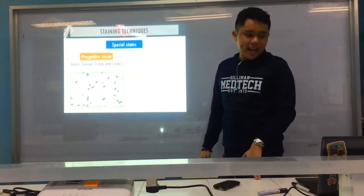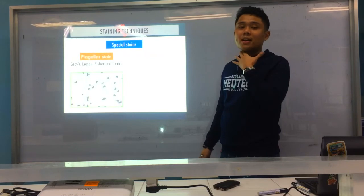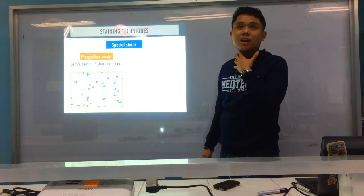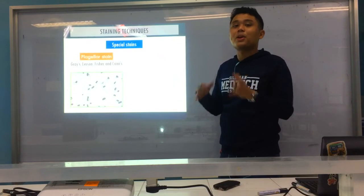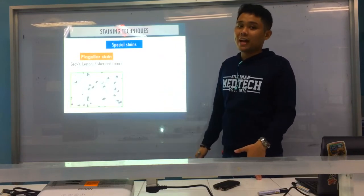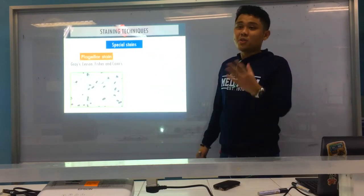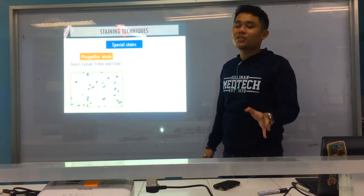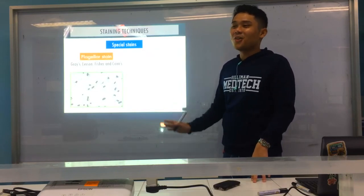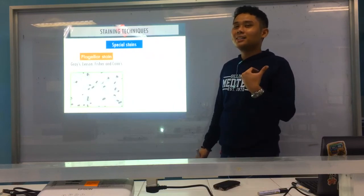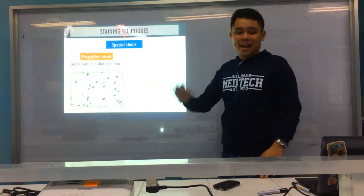Next, flagellar stains — Gray's, Leifson's, and Fisher and Conn's. Flagella are organs of locomotion and also a virulence factor, allowing bacteria to escape the immune system or spread. Not all bacteria are flagellated — most bacilli are motile, but all cocci are non-motile. No staph or strep is motile.